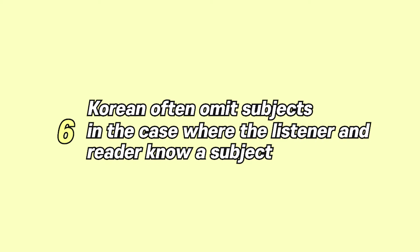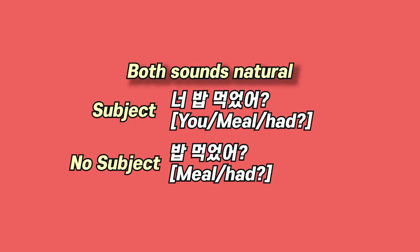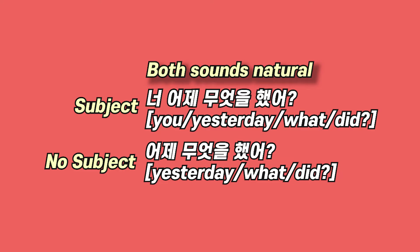Number 6: Koreans often omit subjects, but that is the case where the listener and reader already knows the subject. For example, if you're talking with your friends and asking 'Did you have lunch?' — '너 밥 먹었어?' and simply '밥 먹었어?' both make sense. Another example: 'What did you do yesterday?' In Korean, '너 어제 뭐 했어?' can simply be said as '어제 뭐 했어?'